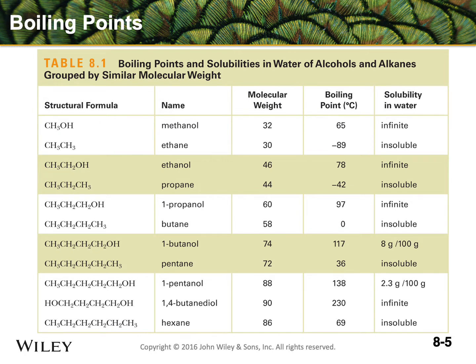Moving down to the next band, by adding another carbon we go to propanol and butane. We see an increase in boiling point for both substances, which is directly correlated to molecular weight. But again, the hydrogen-bonding alcohol can dissolve in water, while the non-hydrogen-bondable alkane is not.